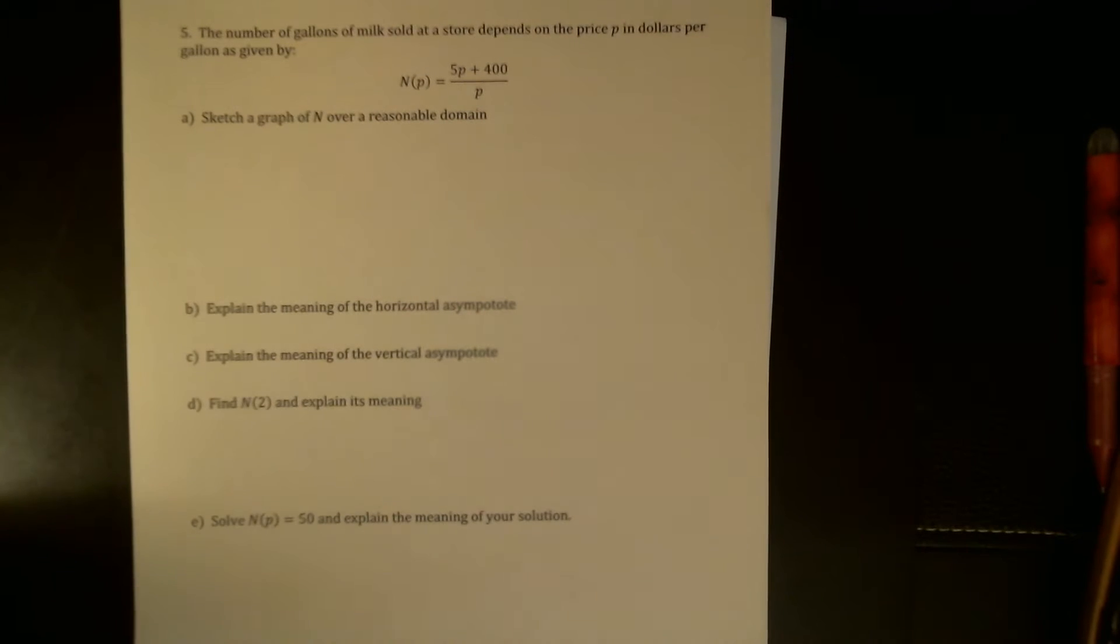Hi everyone. This is my last video for rational functions. I am going to work through a word problem that involves a rational function. It gets back to the horizontal or vertical asymptotes or zeros, and what these tell us in the context of a word problem.